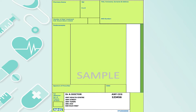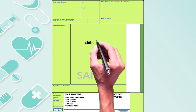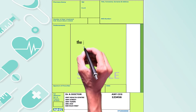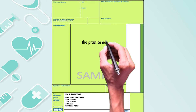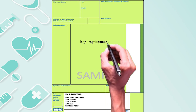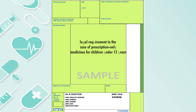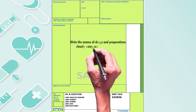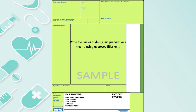It's important that the prescription is written legibly in ink, stating the date, the name and address of the patient, and the practice address. It is preferable that the age and the date of birth of the patient is also stated, and this is a legal requirement in the case of prescription-only medicines for children under the age of 12. Write the names of drugs and preparations clearly using approved titles only. Do not use any abbreviations.